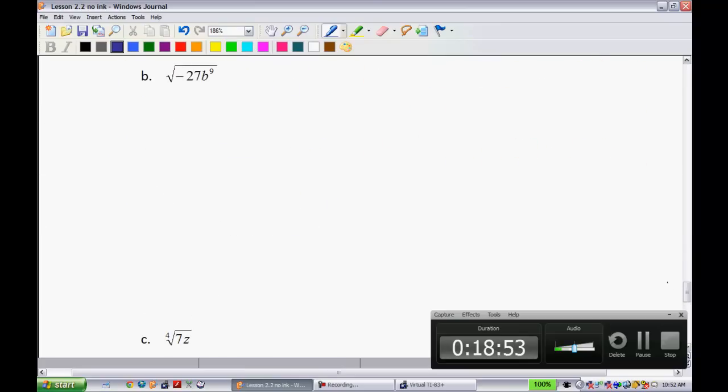Turn the page to three more examples. These guys aren't too bad. Next one we have the square root of negative 27b to the power of 9. Keep in mind that it's to the power of 9, pay attention to that.